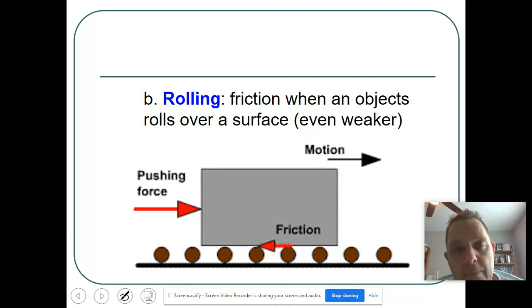And the third type is rolling friction. And this is even weaker. Now, if you think about it, this would make sense because our cars have wheels. And that looks just like this picture with the round, the brown spheres or balls on the bottom that make it less friction on this one. So once again, static is the strongest and then kinetic and then rolling.